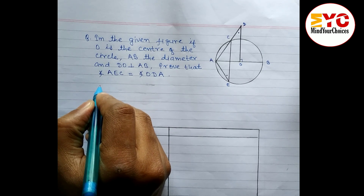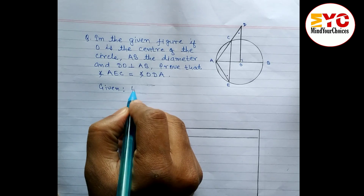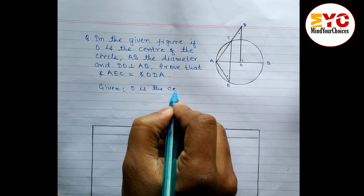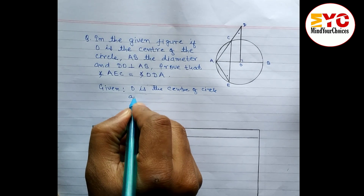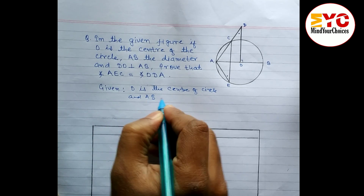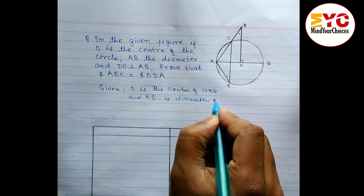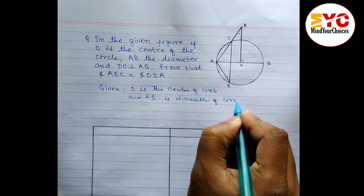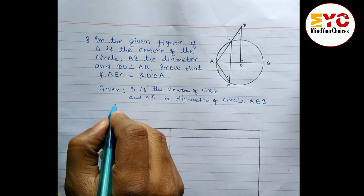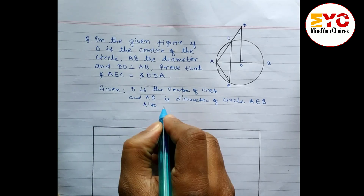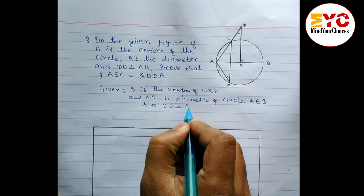First of all, let's write what is given here. O is the center of the circle, AB is the diameter of the circle. Also, both lines are perpendicular to each other — DO is perpendicular to AB.